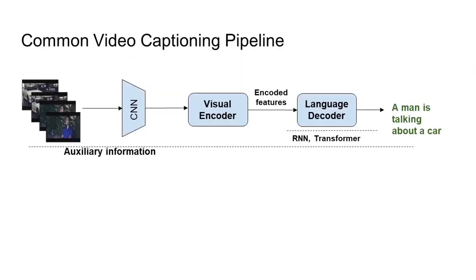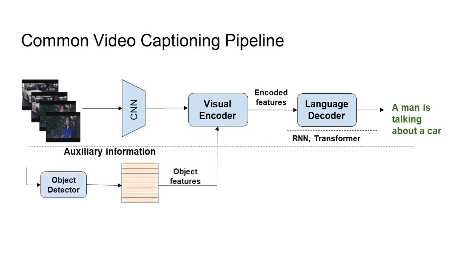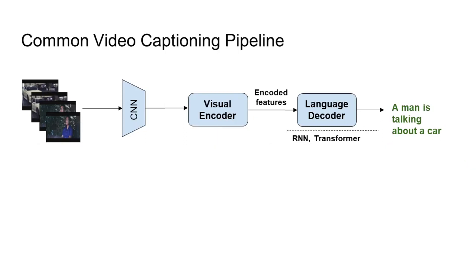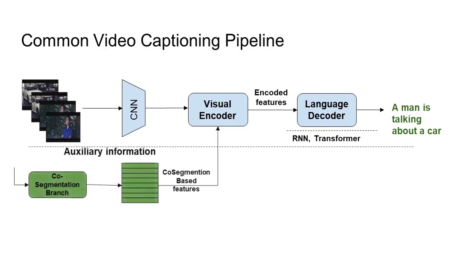In summary, a general video captioning pipeline contains a visual encoder and a language decoder where the visual encoder is augmented with object features via object detectors. We ask: can we make the model focus on local object regions without depending on external object detectors? To answer this question, we propose to augment the model with a co-segmentation based attention branch that can capture local salient regions automatically.